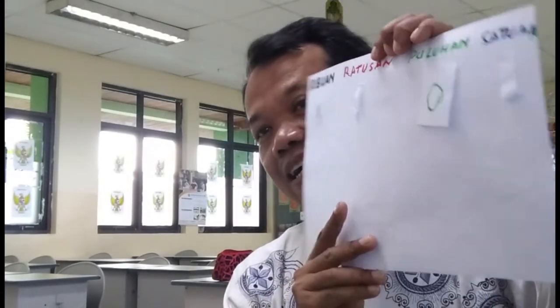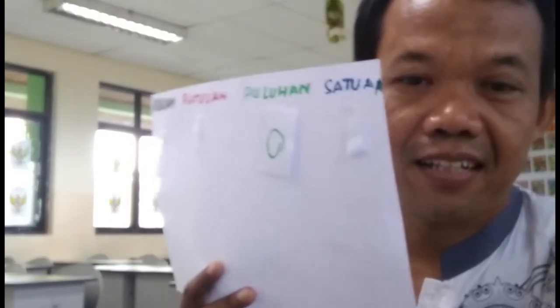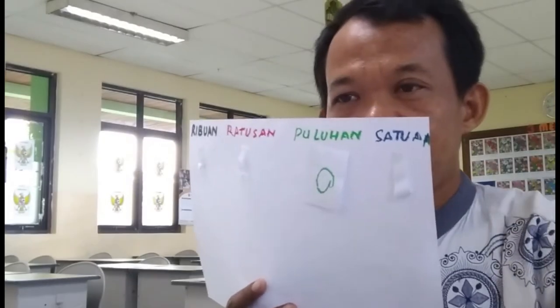Ambil angka nol warna hijau, tempel. Nah kemudian ambil warna merah, angkanya itu 6. Warna merah angka 6, ambil.